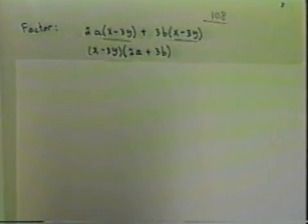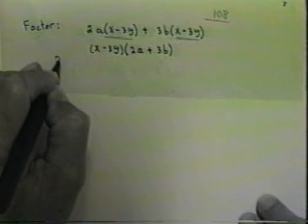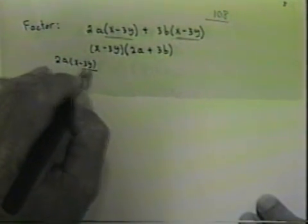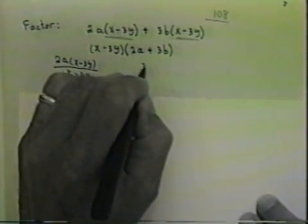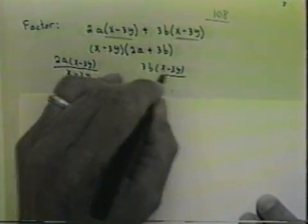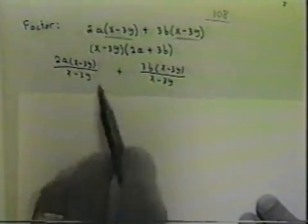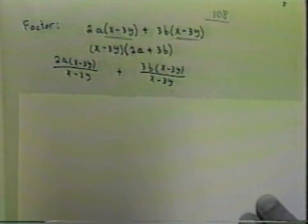Let me show you what I have done to get these terms. I've taken the 2a times x minus 3y and divided it by x minus 3y, and I took the 3b times x minus 3y and divided it by x minus 3y. I divided the polynomial by the common factor x minus 3y.